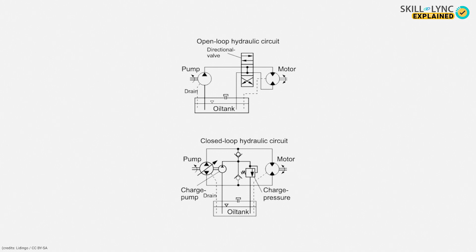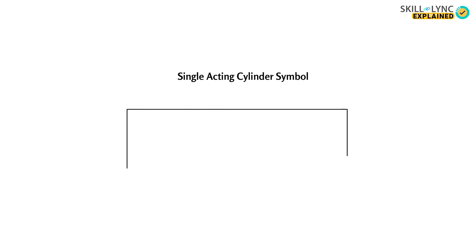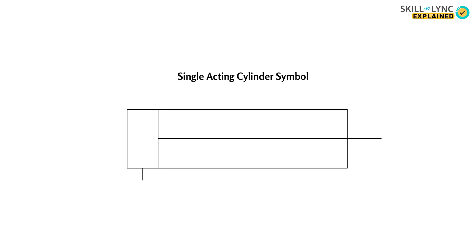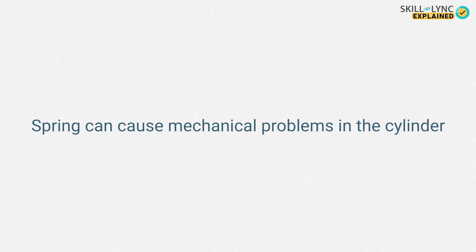In a hydraulic circuit, the components are represented such that it clearly shows the functioning of the component without actually showing its detailed construction. This allows for easy analysis of the hydraulic circuit, and a single acting cylinder is represented similarly. One drawback of the single acting cylinder is the spring, which can cause mechanical problems due to spring failure.